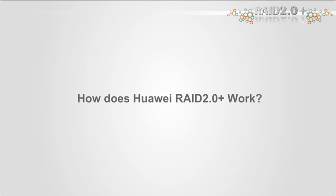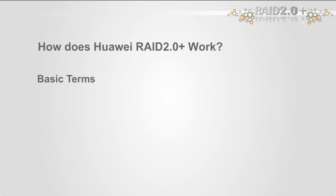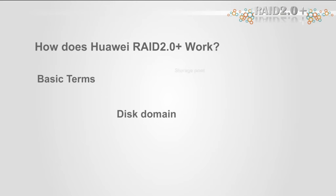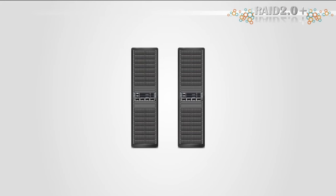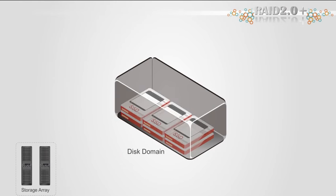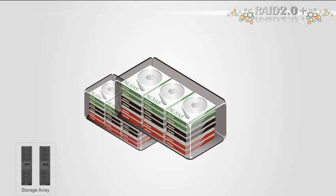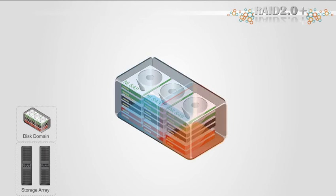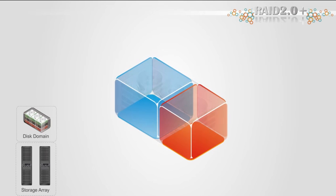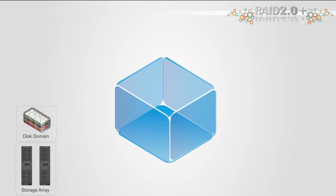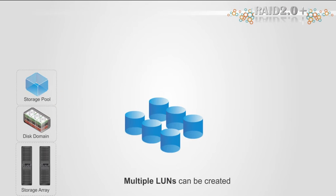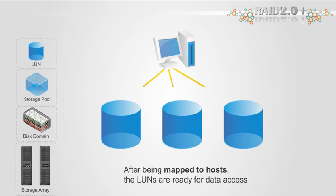Now for the second part of our presentation: how does Huawei RAID 2.0 Plus work? To explain its inner workings as clearly as possible, I will first cover some basic terms, such as disk domain, storage pool, hot spare capacity, and LUN. A disk domain is a physical storage space consisting of multiple disks. Some space of a disk domain is used to create storage pools, and other space is used as hot spare space. In a storage pool, multiple LUNs can be created. After being mapped to hosts, the LUNs are ready for data access.